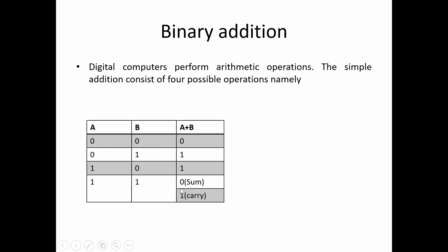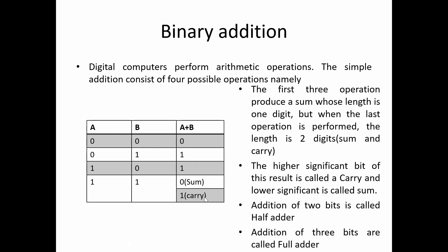When we perform 1 plus 1, the answer is 0 and there is a carry 1. In logical addition, 1 plus 1 will be 1, but in binary addition, 1 plus 1 is 0 and carry is 1. The first three operations produce just a sum, but the last operation produces sum as well as carry. When you add two bits A and B, that is called a half adder. When we add three bits, that addition is called a full adder.